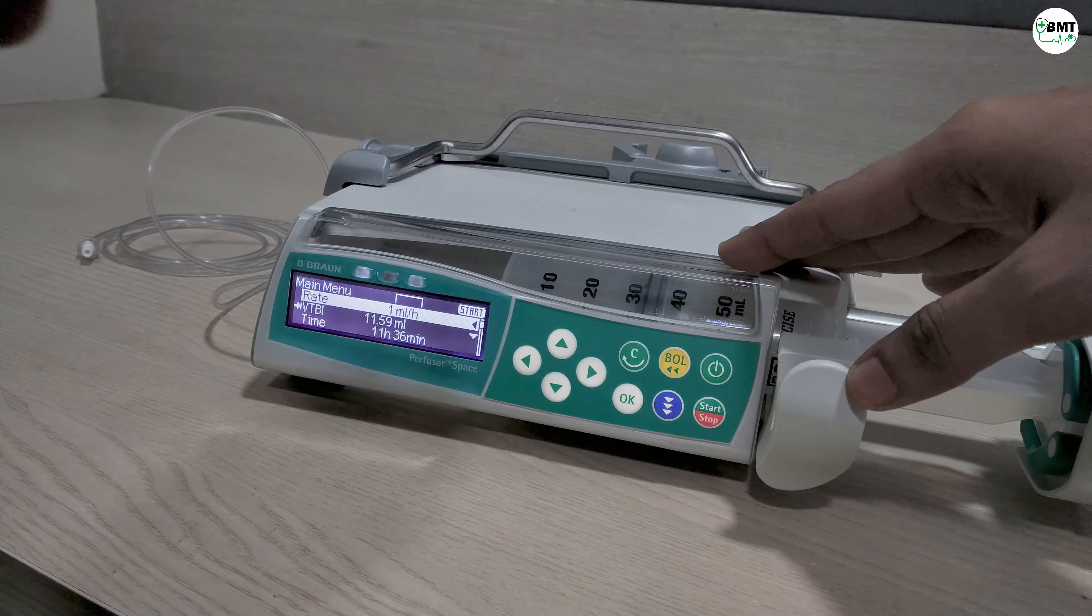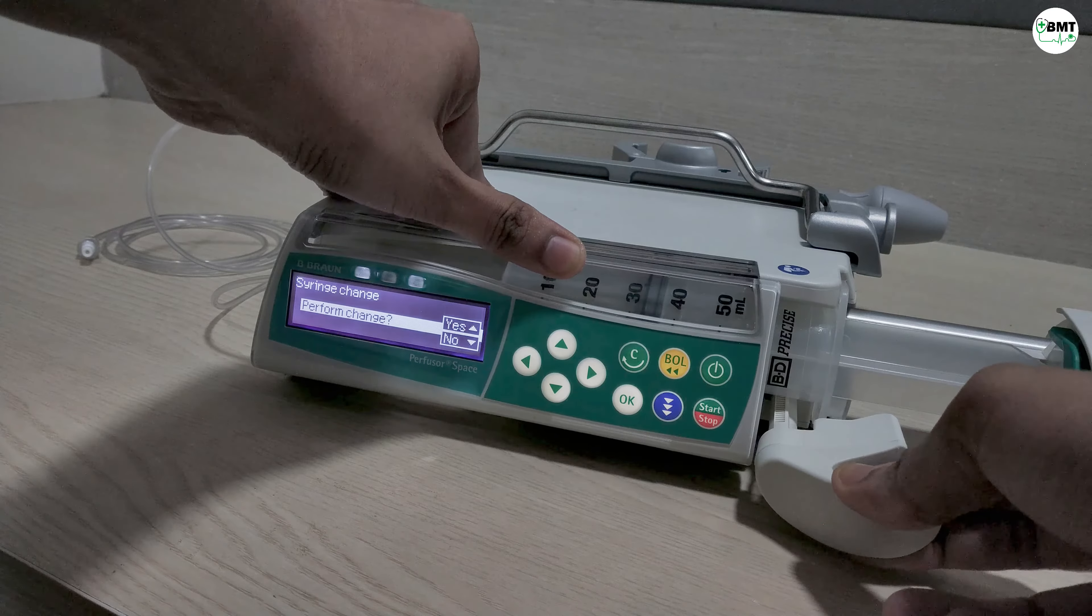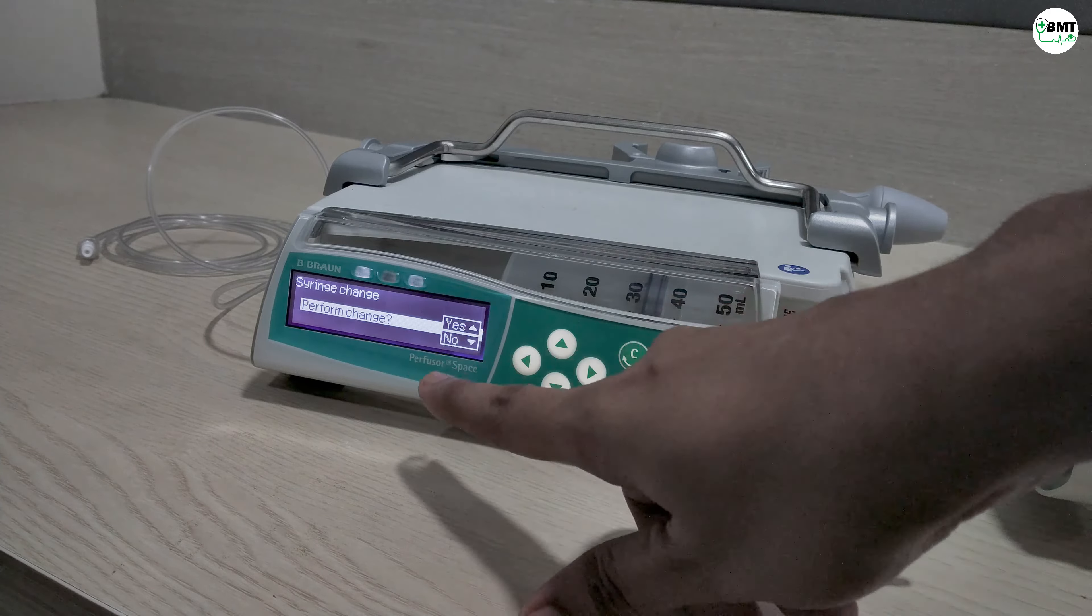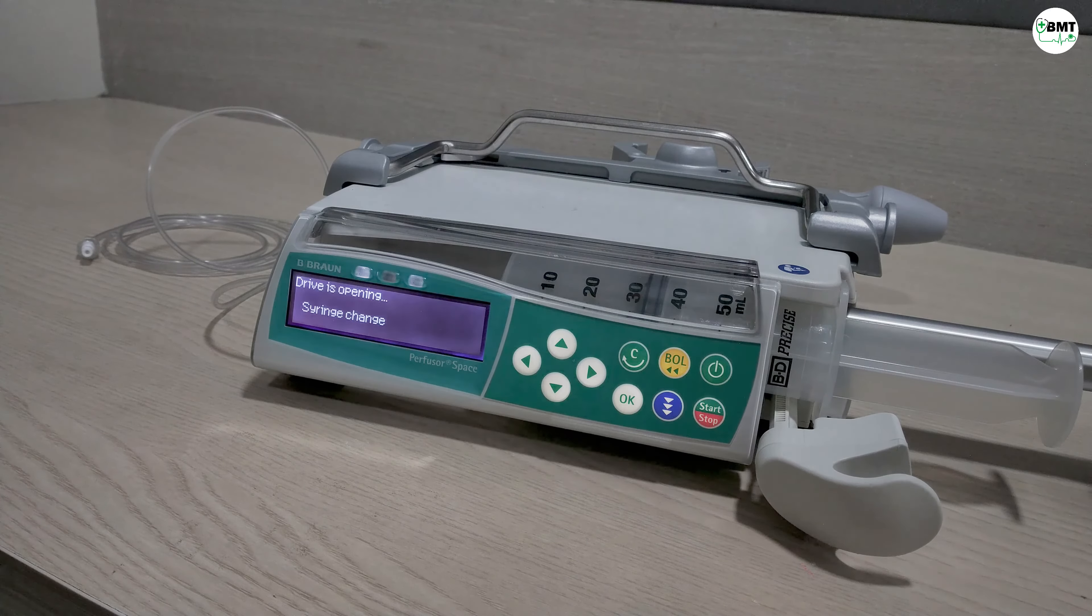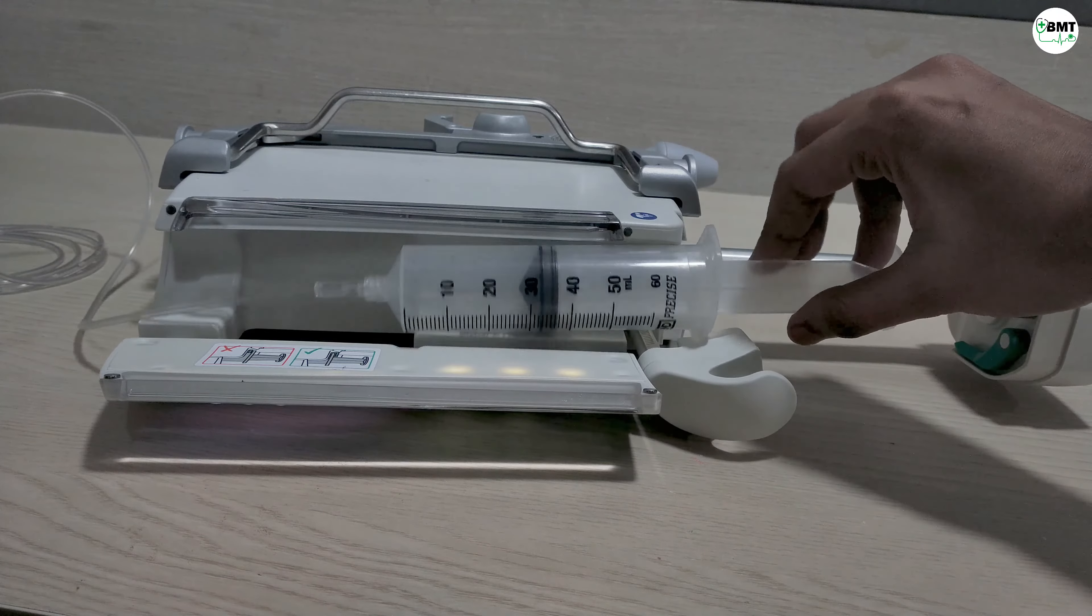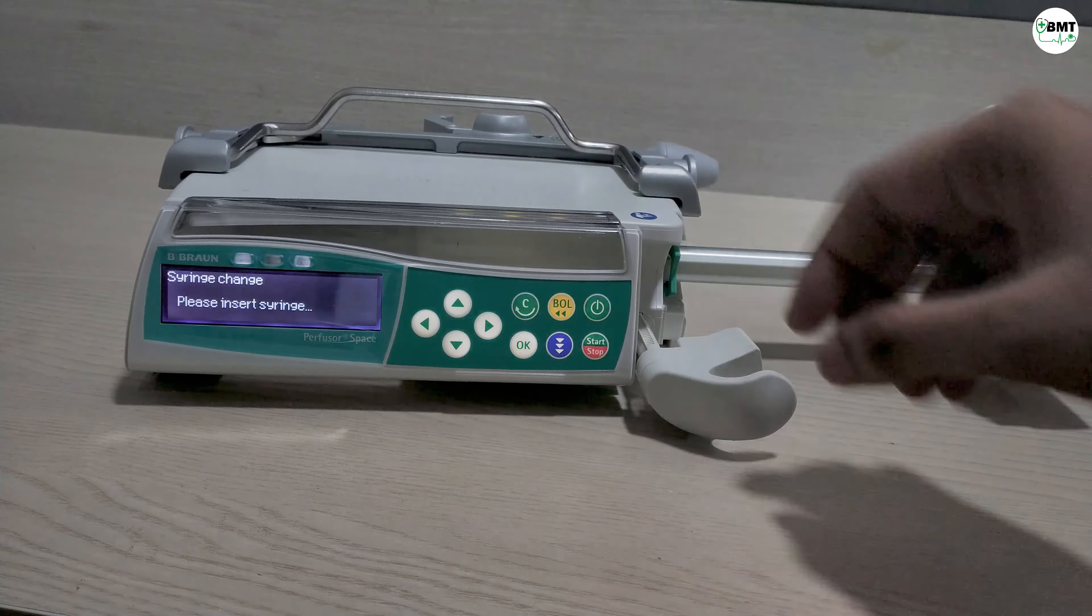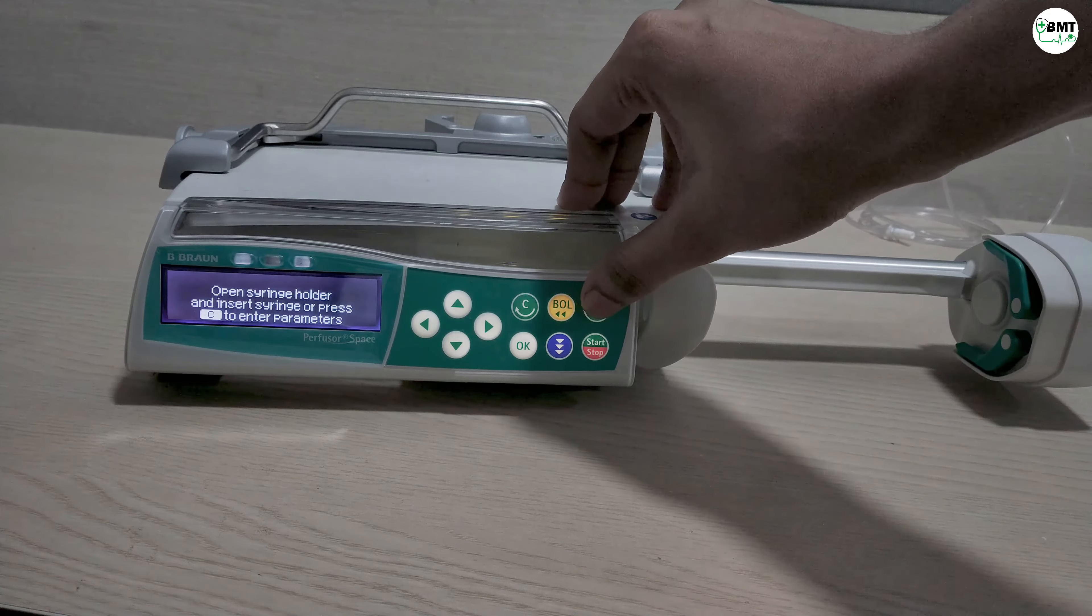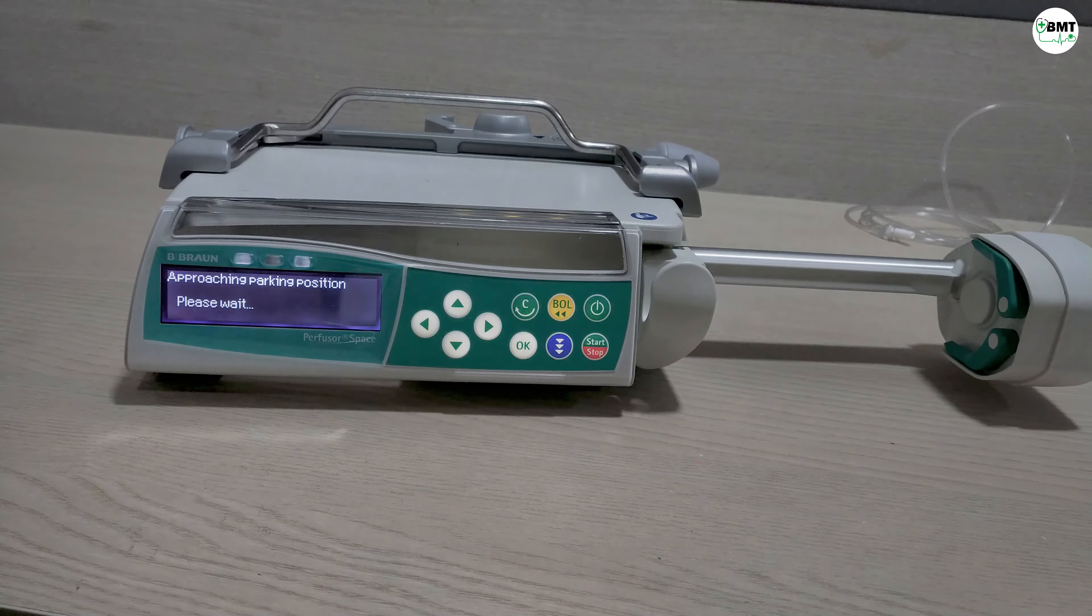Now if you want to turn off the syringe pump, pull this. It will ask perform change, yes or no. Yes. Remove syringe. Press on-off key for 3 seconds and the pump will turn off.